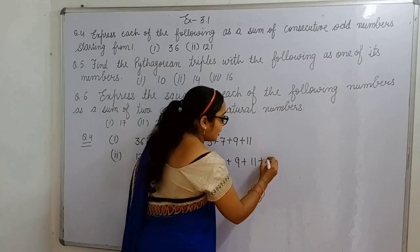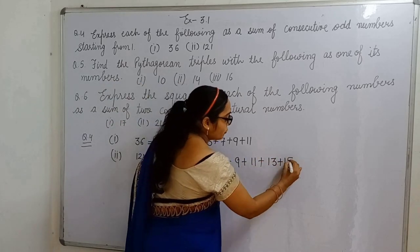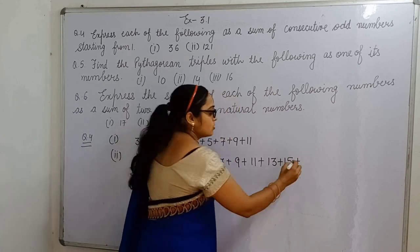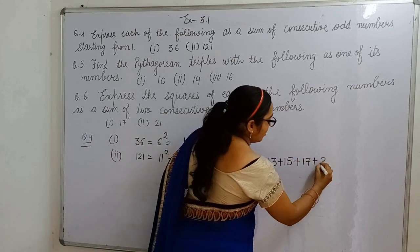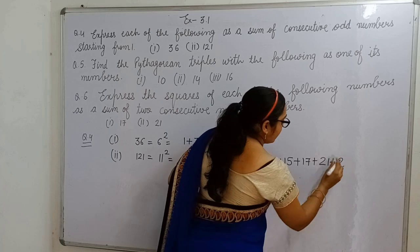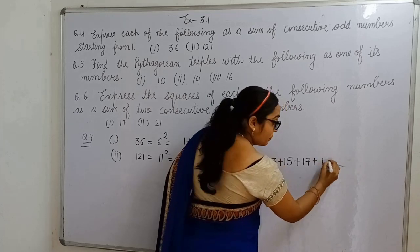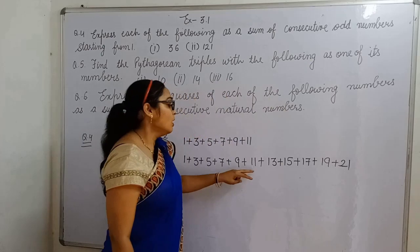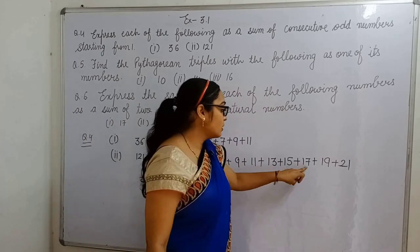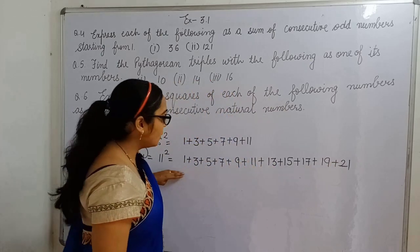Now, thirteen, fifteen, seventeen, twenty-one, nineteen. You don't skip here, and twenty-one. Now these are eleven.